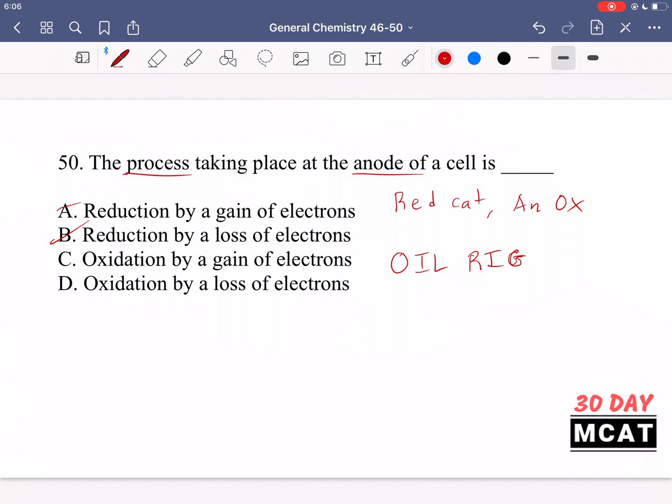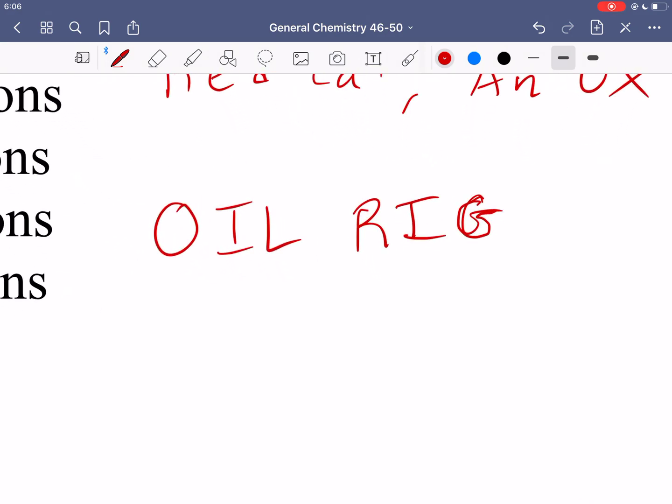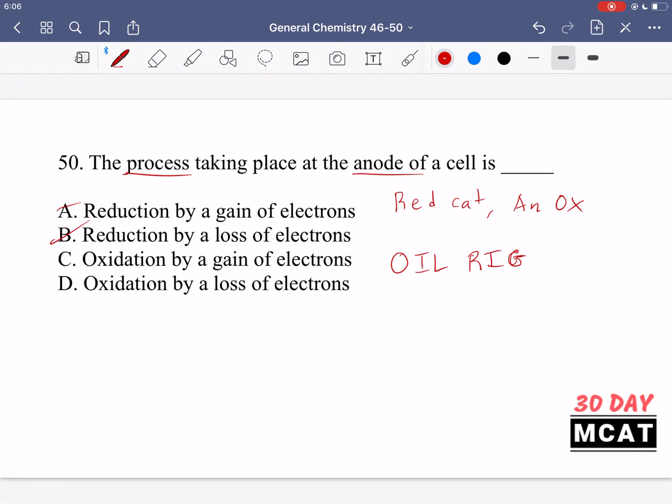Oil rig tells us that. Oil is oxidation is loss of electrons. Reduction is gain. So when we gain electrons something is being reduced. Therefore when you lose electrons that is oxidation. So C is incorrect and D is the correct answer.